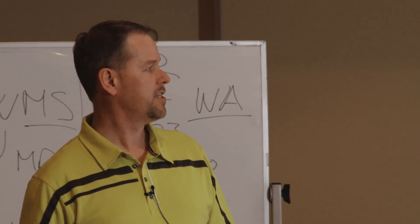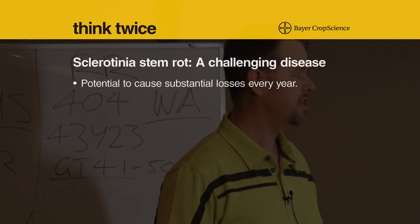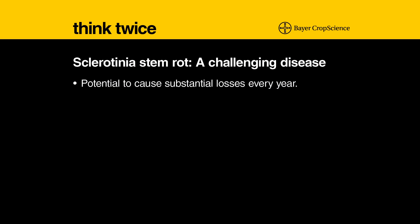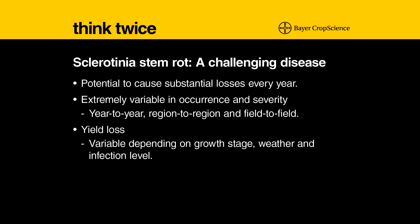To sum up sclerotinia: it certainly is a disease that has the potential to cause substantial losses every year for us in Western Canada. It is extremely variable in its occurrence and severity from year to year, from region to region, and field to field. Yield loss can be variable depending on the growth stage at which the infection occurs, and it is really related to the weather conditions that were present.